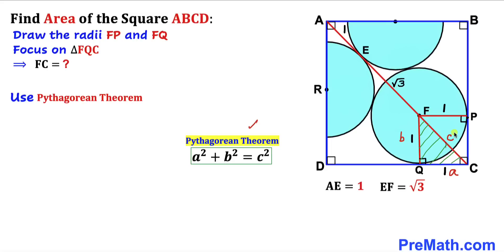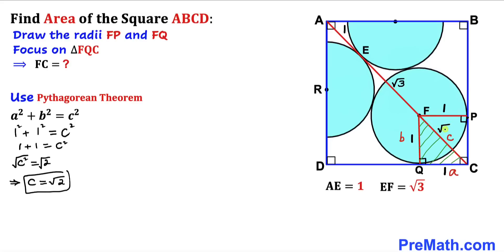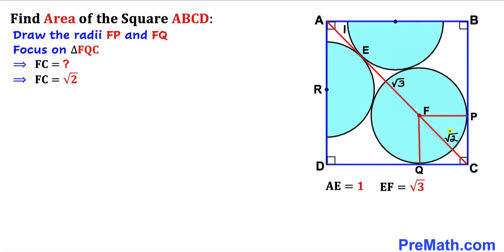In triangle FQC, side A = FQ = 1 and side B = QC = 1, so 1² + 1² = C², giving C² = 2. Taking the square root, C = √2. Therefore FC = √2.